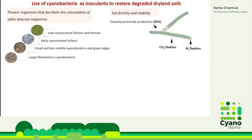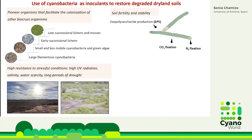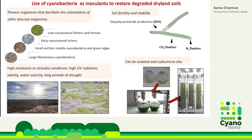Cyanobacteria also produce exopolysaccharide compounds that have a very important role in the retention of water in the soil and in soil stability. They are also able to resist the stressful conditions that we have in drylands — high UV radiation, high salinity concentrations, water scarcity, and long periods of drought. They are able to survive under these harsh conditions. Another important advantage is that they can be isolated from the biocrust and cultured ex situ using bioreactors.